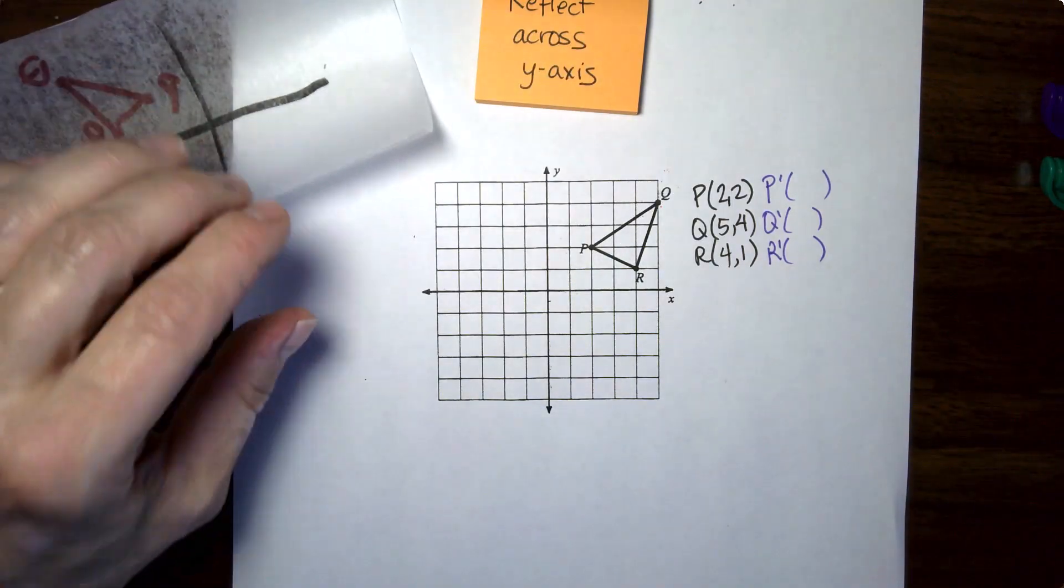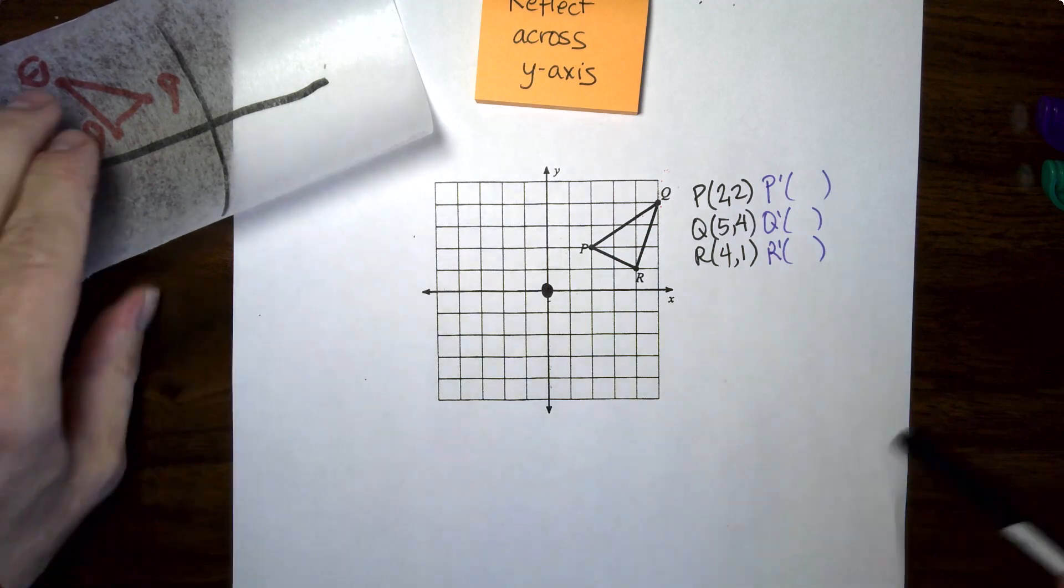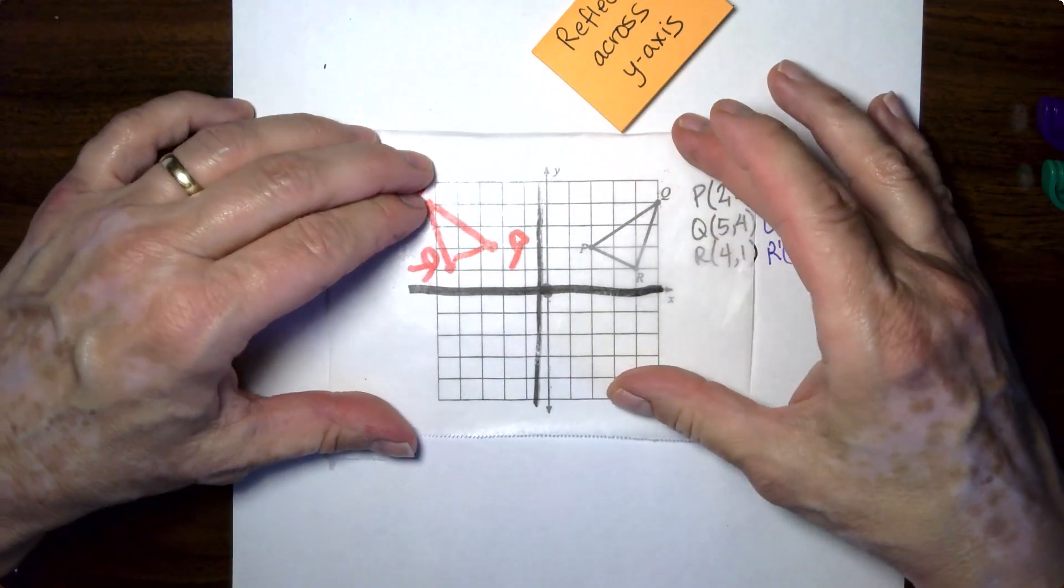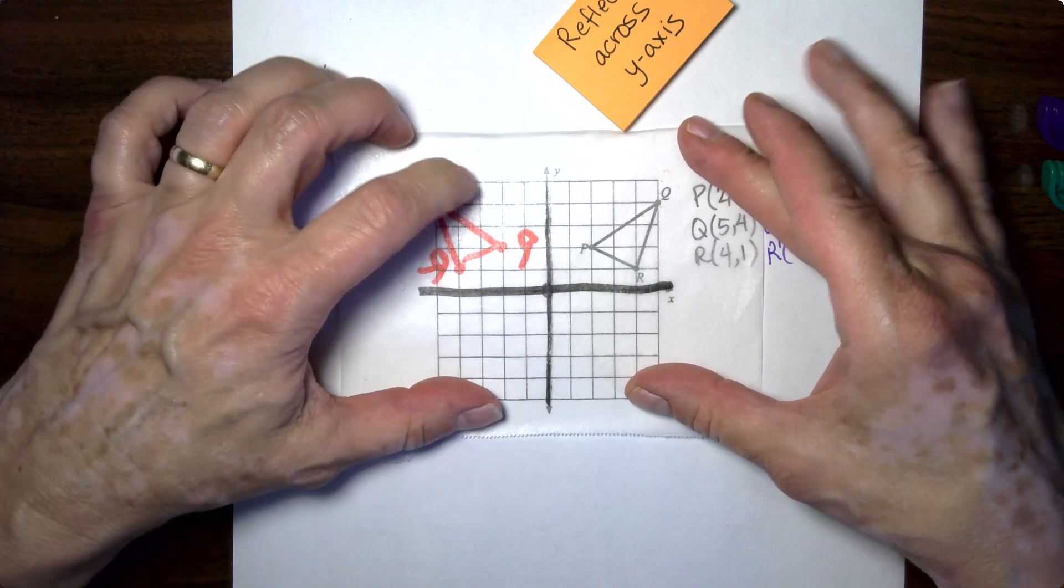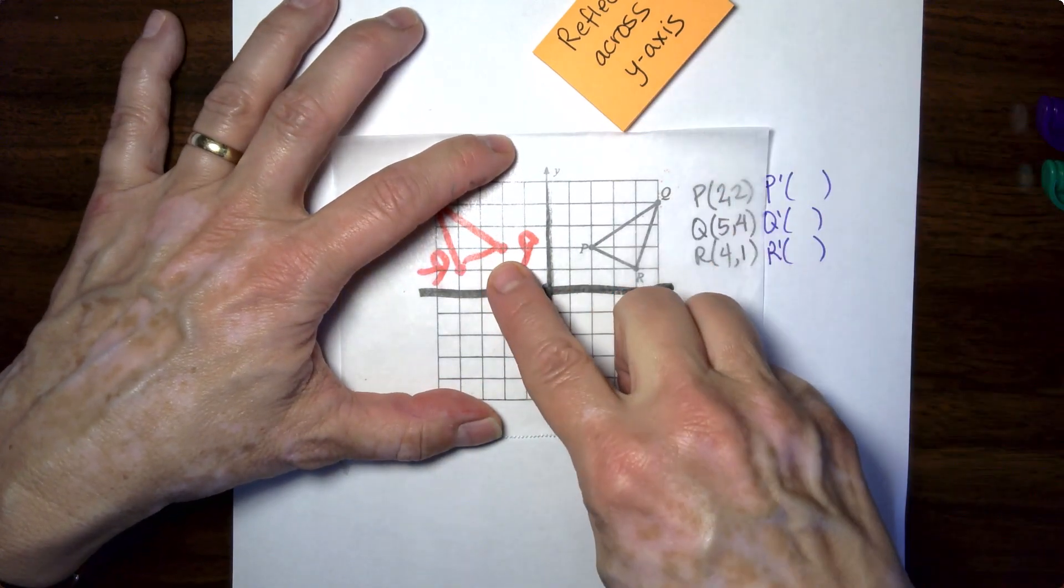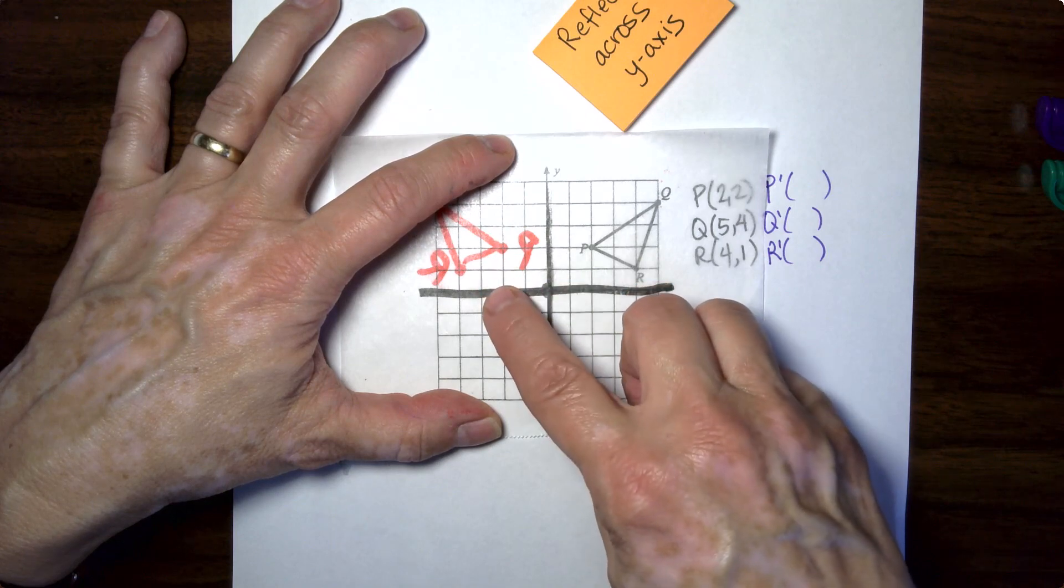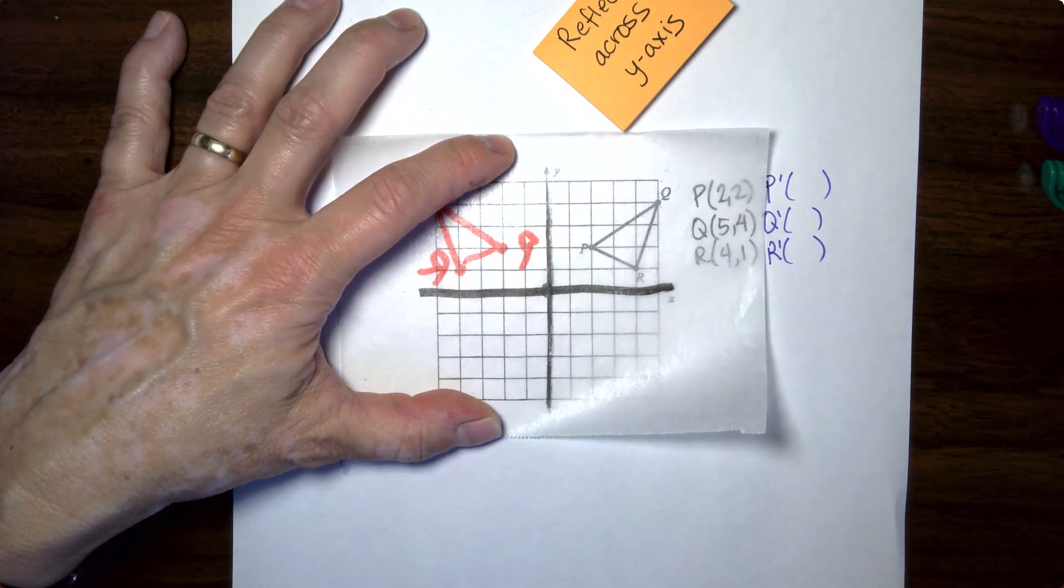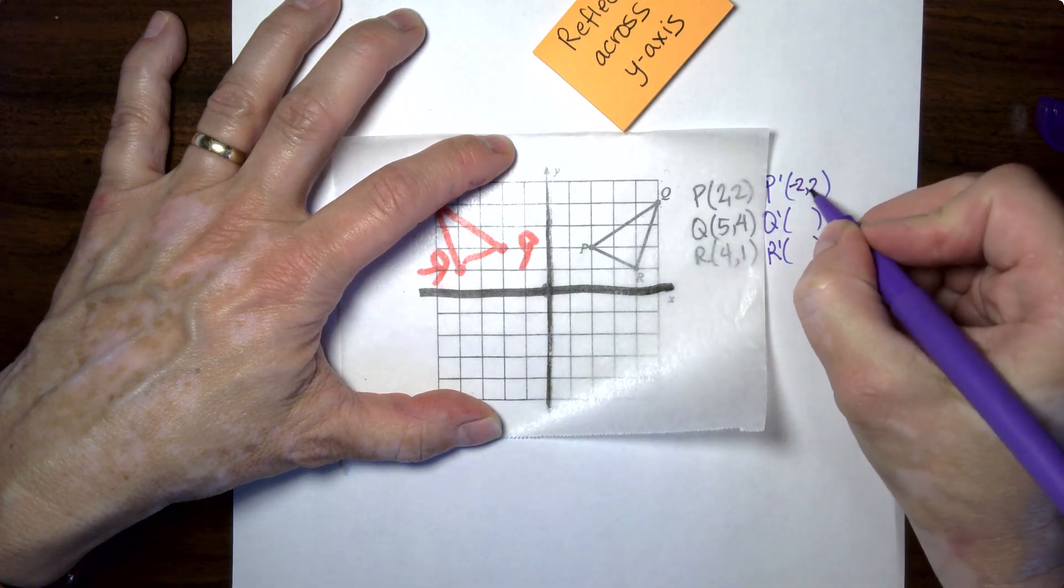Of course, the writing is backwards, but that ain't no big deal. We can line it back up on your origin. I forgot to draw that. Here's the origin. That's like kind of like your center of this whole thing. So make sure that's lined up. And we can see where the new points are. There's the new P. It is negative two, positive two. So I'm going to write that down. Negative two, positive two.